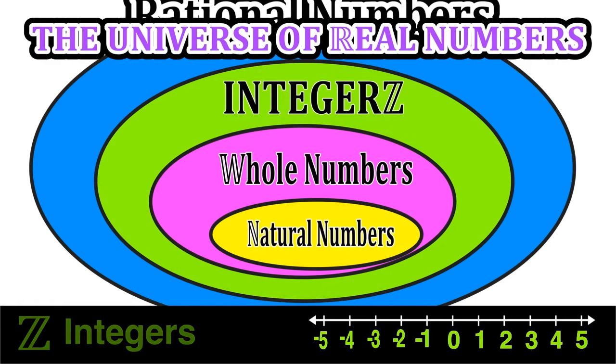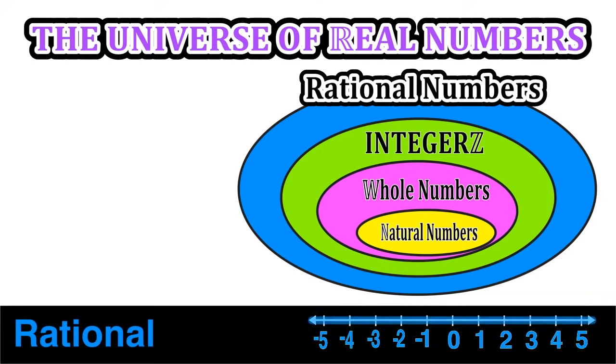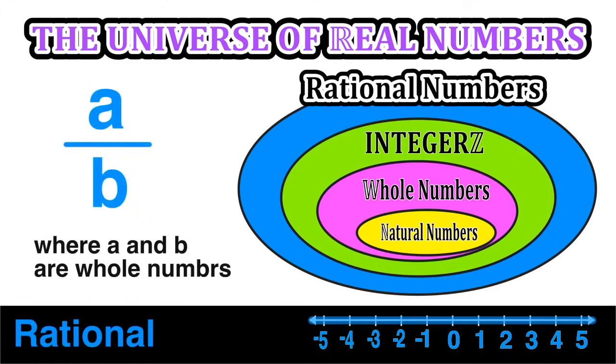And all of these are subsets of the greater universe of rational numbers. Now the rational numbers will fill in the gaps in between those integers on the number line. In this case, any number that can be written as a fraction a over b, where a and b are both whole numbers. An example would be one-half.